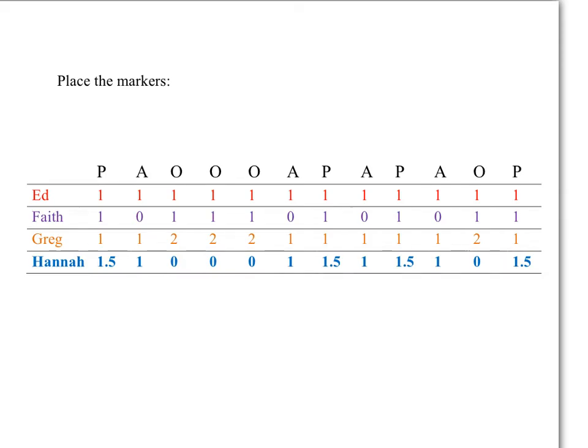Let's place the markers. Ed thinks that all the items are worth 12 Ed points total, so 12 divided by 4 equals 3, and after every 3 Ed points, Ed will put a marker.